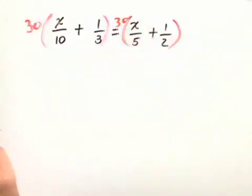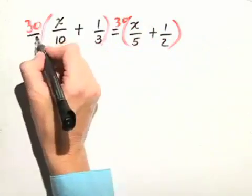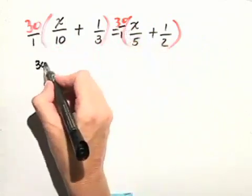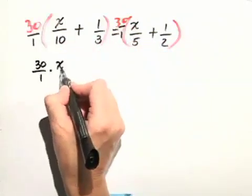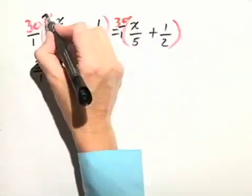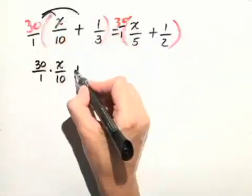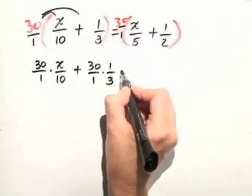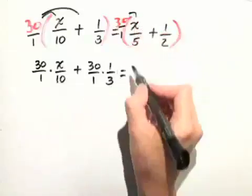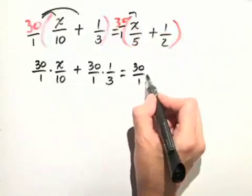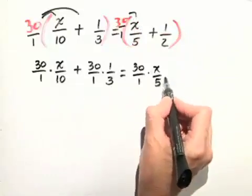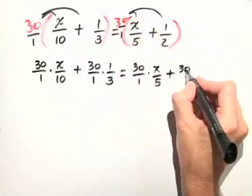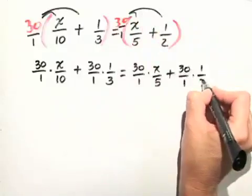And when we do that, I'll write the 30 as 30 over 1. So we have 30 over 1 times x over 10, when we distribute, plus 30 over 1 times 1 third equals, we have 30 over 1 times x over 5, plus, distribute one more time, 30 over 1 times 1 half.